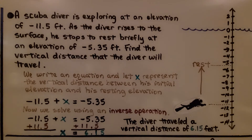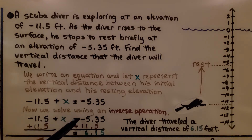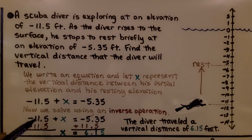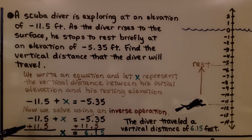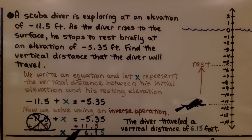Now we solve using an inverse operation. We have negative 11.5 plus x equals negative 5.35. The inverse operation is applied to negative 11.5. We want to isolate x, so we add 11.5 to both sides of the equation. Negative 11.5 plus 11.5 creates a zero pair and we eliminate it. Adding 11.5 to negative 5.35 gives us positive 6.15. We know that x equals 6.15.